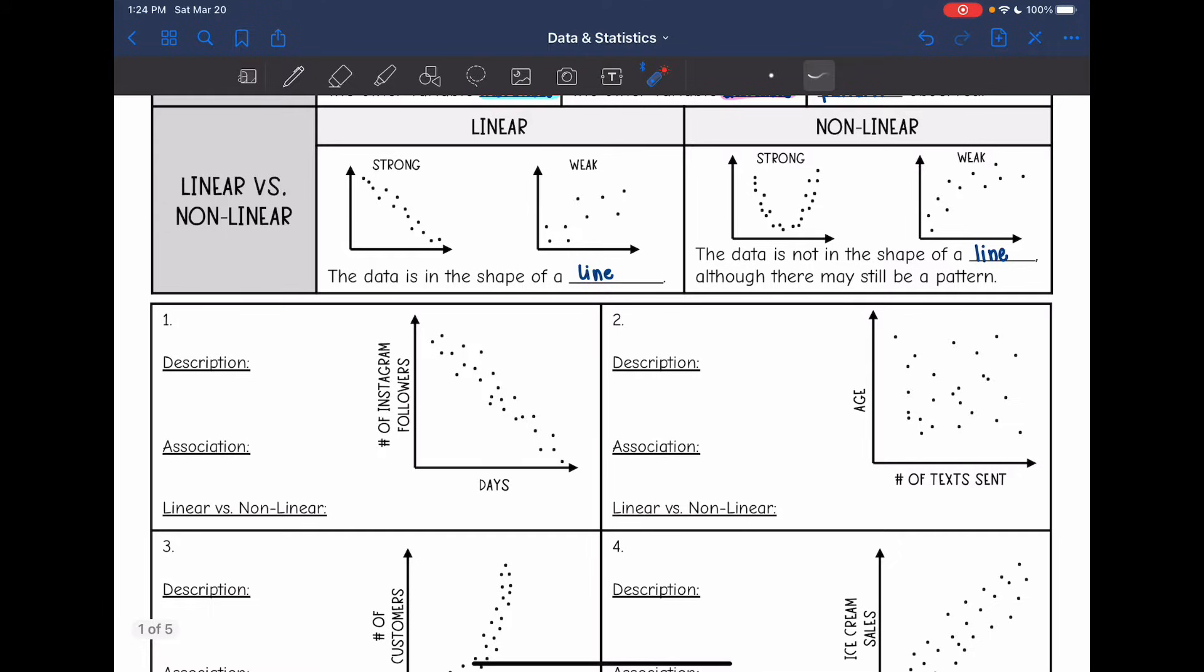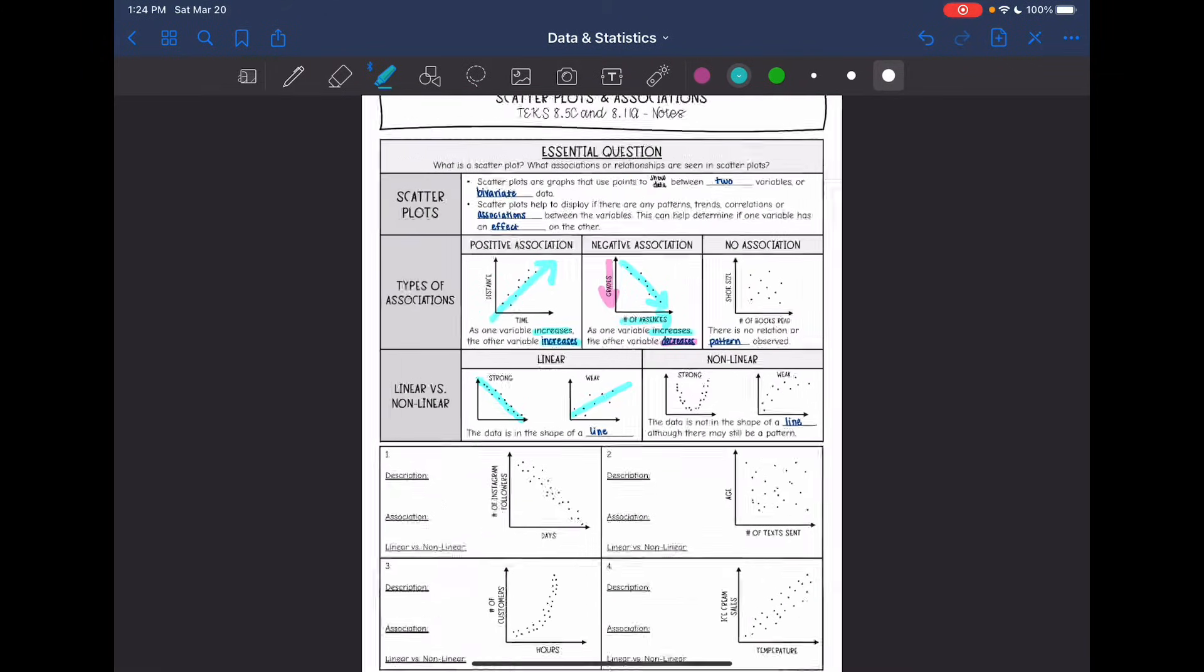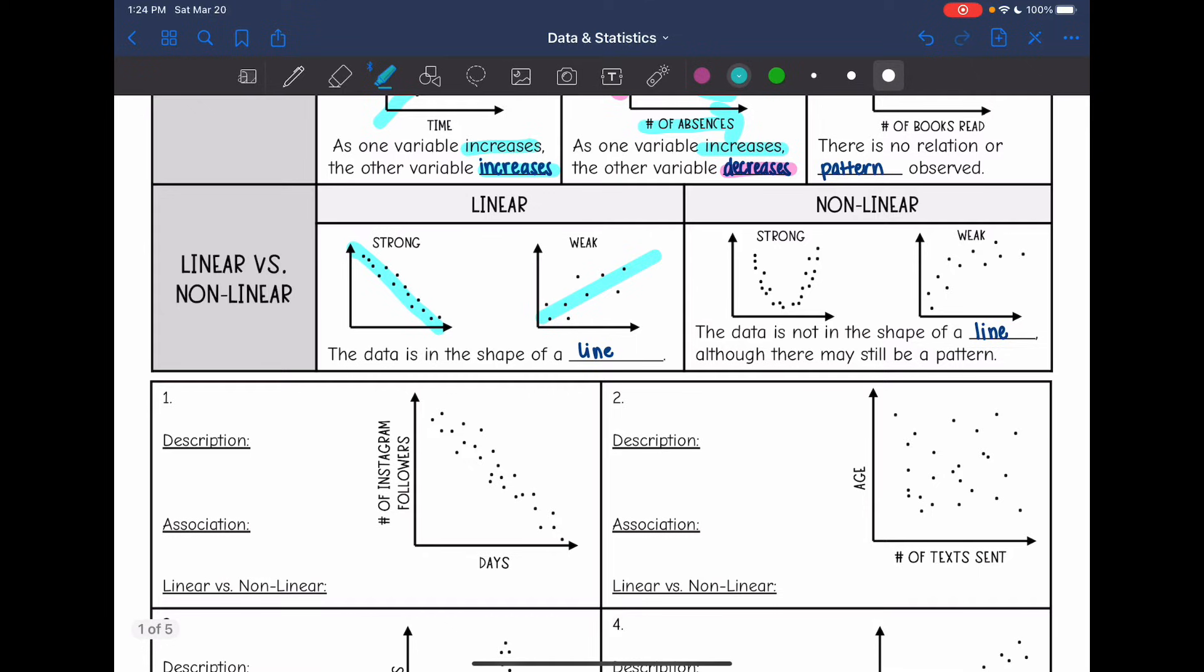Then we're also going to look at linear or non-linear. So linear is whenever there is a line that can be drawn. This first one is strong because the points are close together. And that second one, it's still in the shape of a line, but it's weak because the points are further apart.